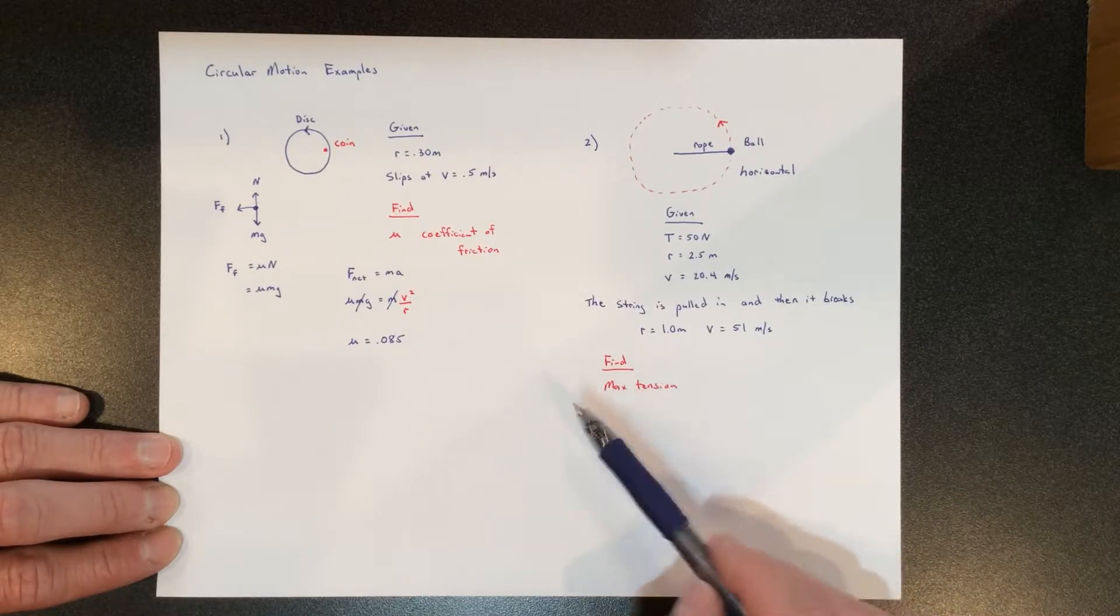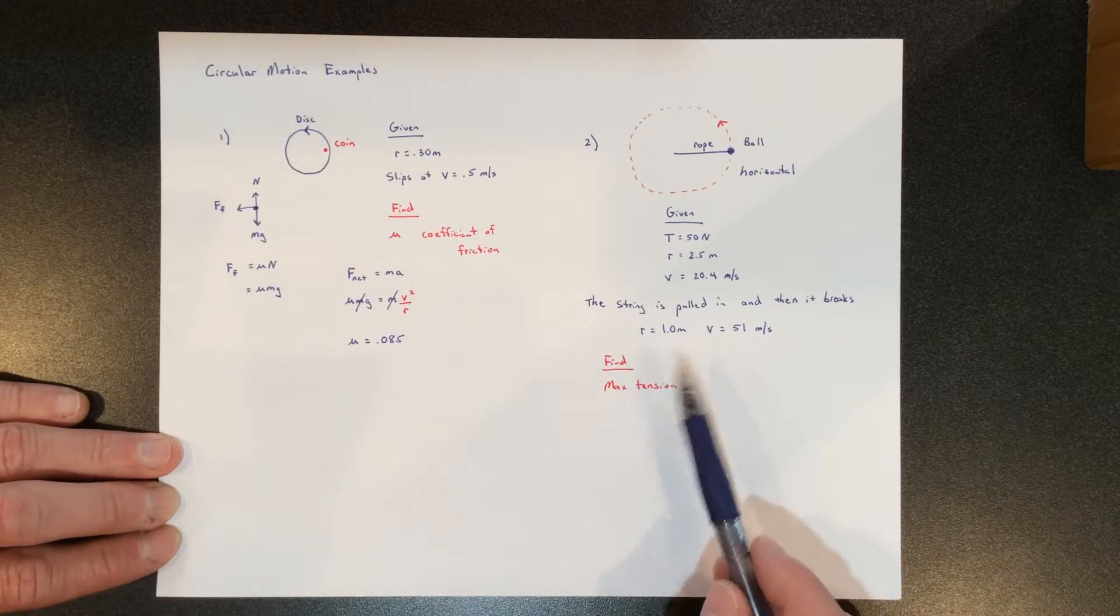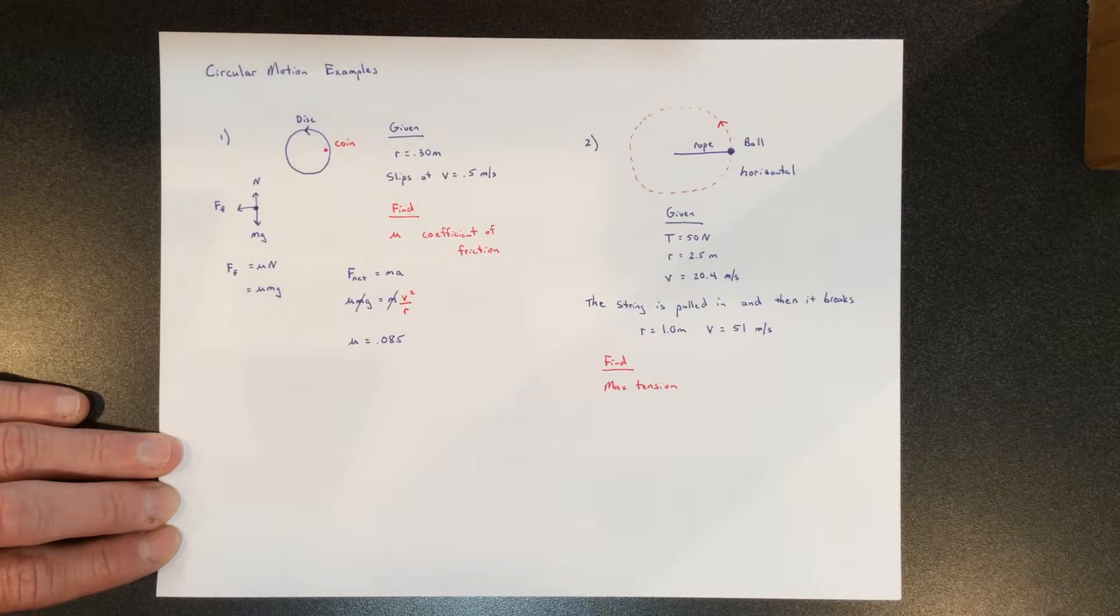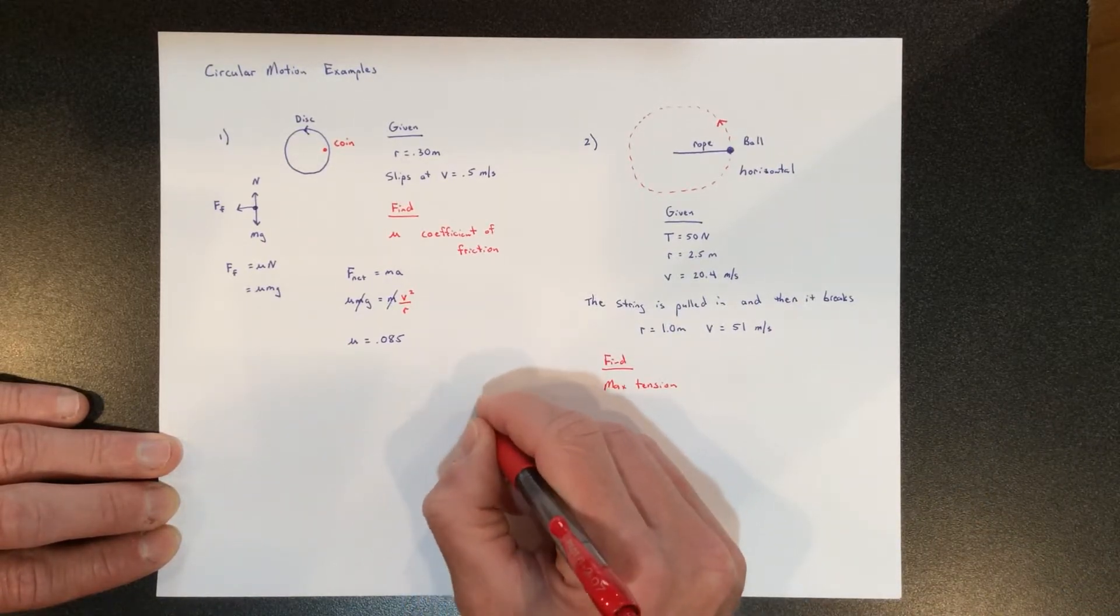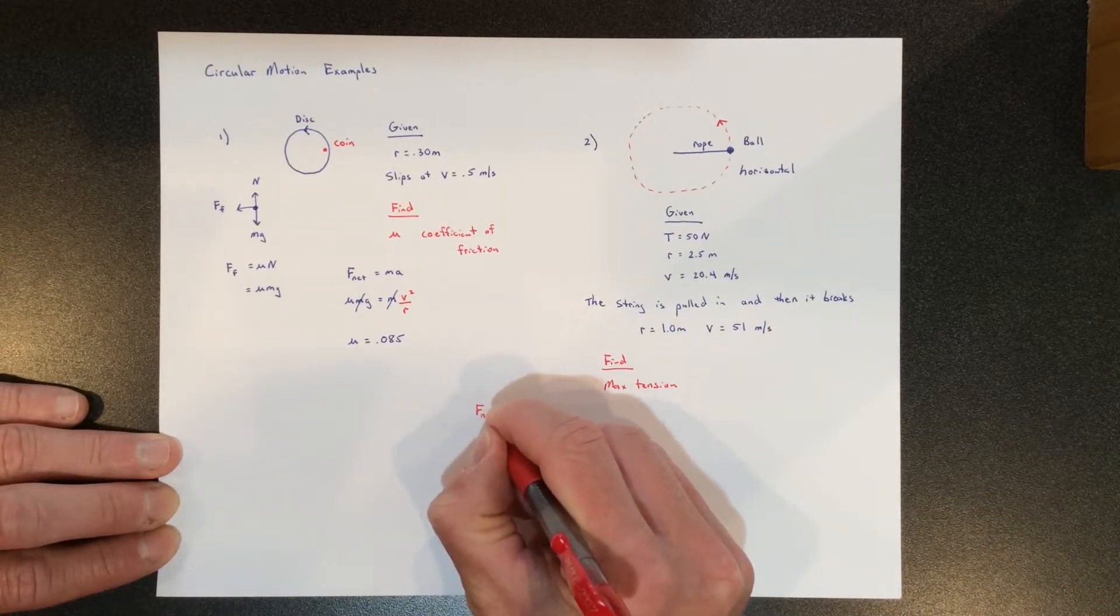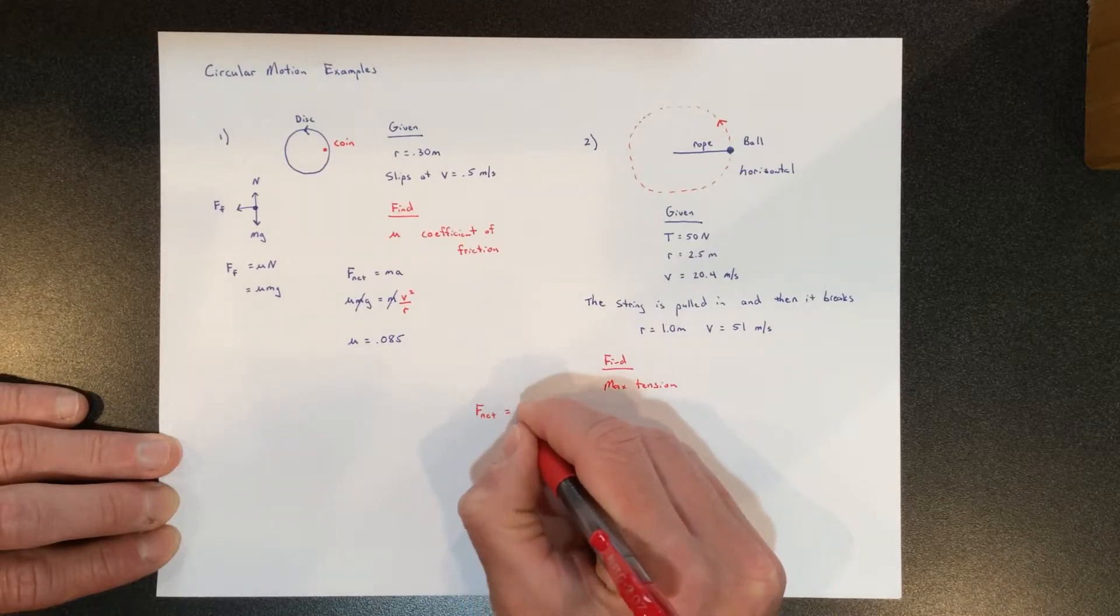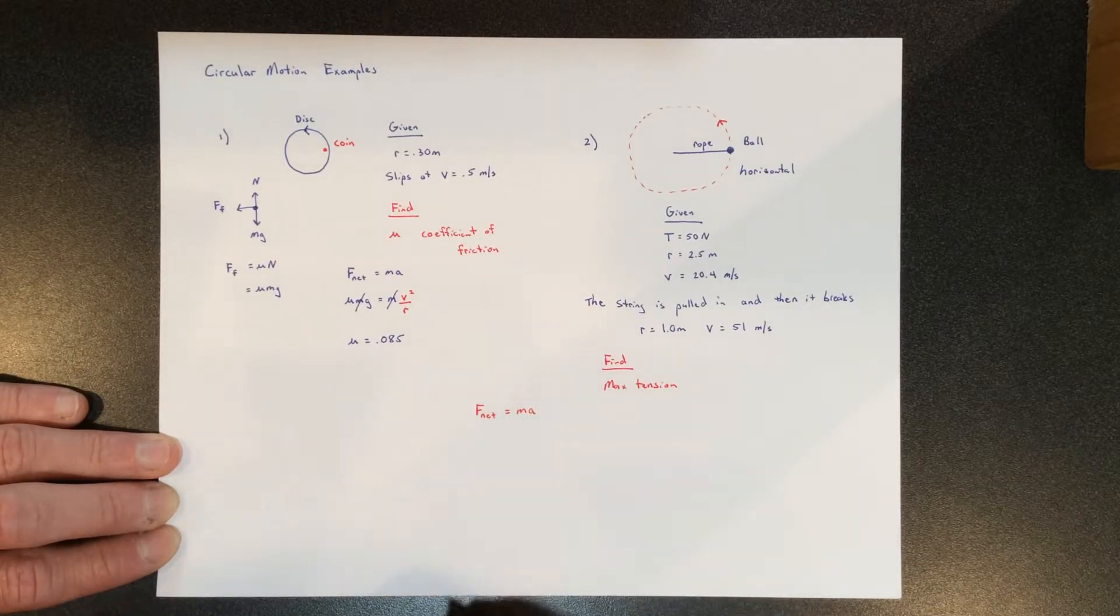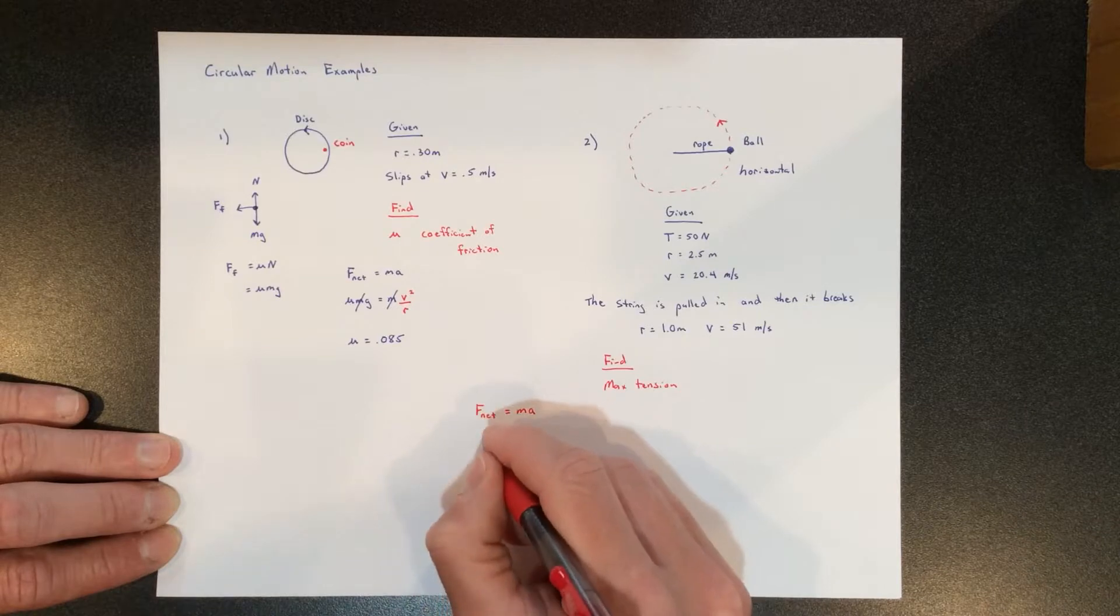We want to figure out that when the string breaks, what's that maximum tension? Any more than that and the string can't handle it. So what's this going to do for us? Well, the given information, looking at f equals ma, is going to give us the ability to find the mass of the ball.